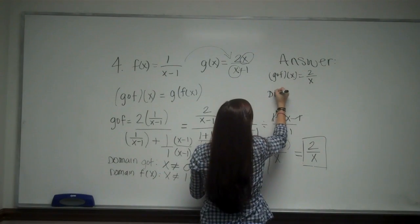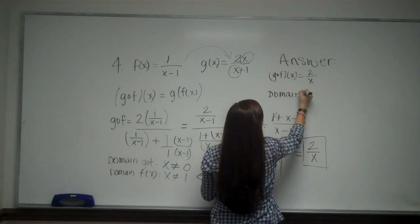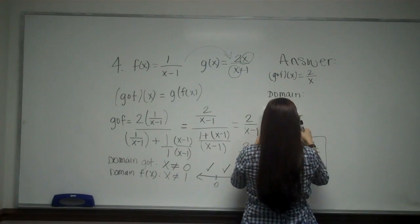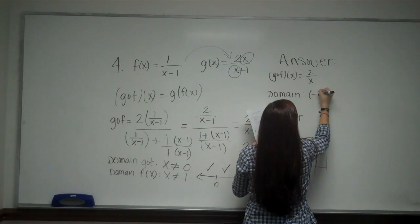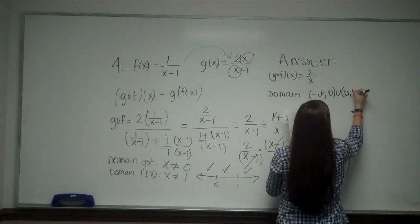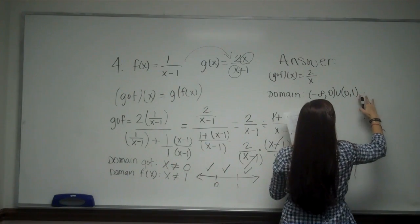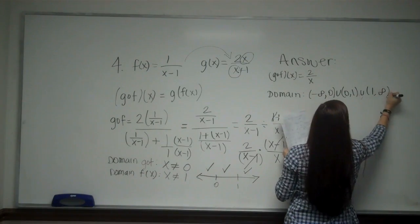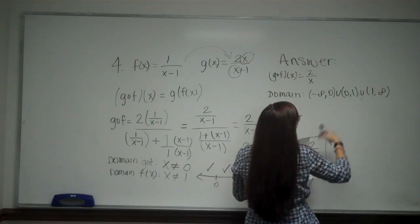And your domain will be from negative infinity to 0, union 0 to 1, union 1 to infinity. And this is answer D.